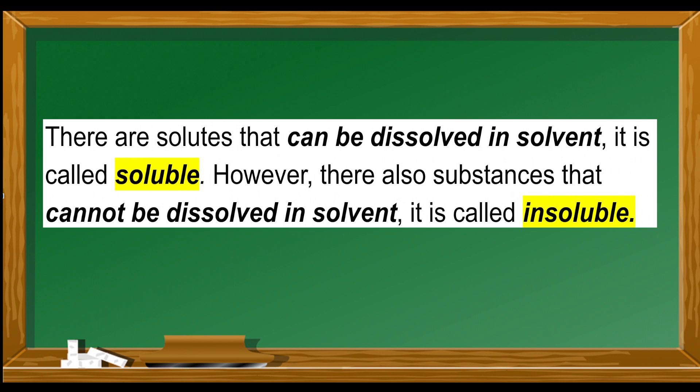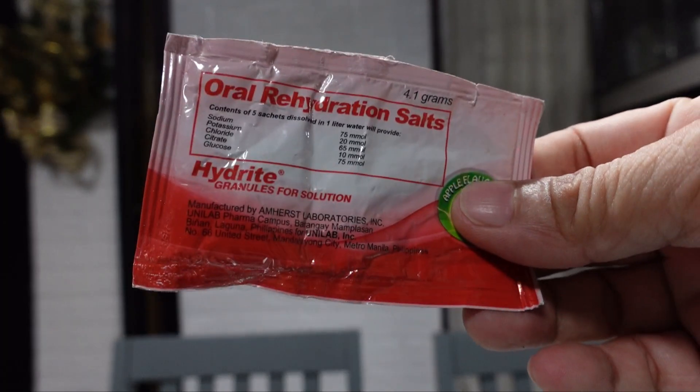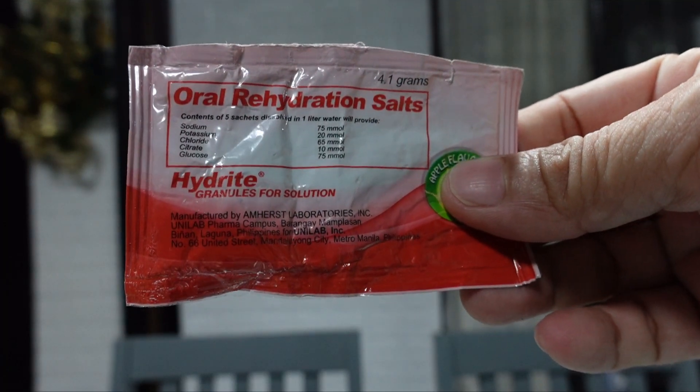There are solutes that can be dissolved in a solvent — these are called soluble substances. However, there are also substances that cannot be dissolved in a solvent — these are called insoluble substances.